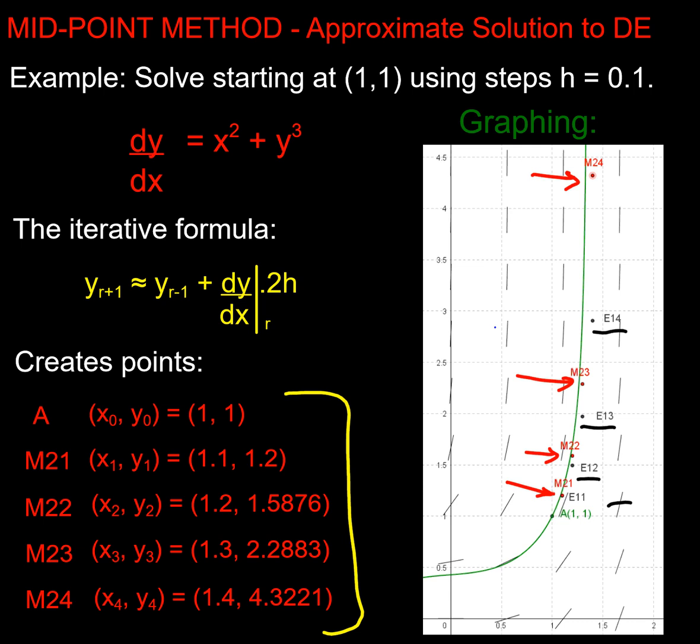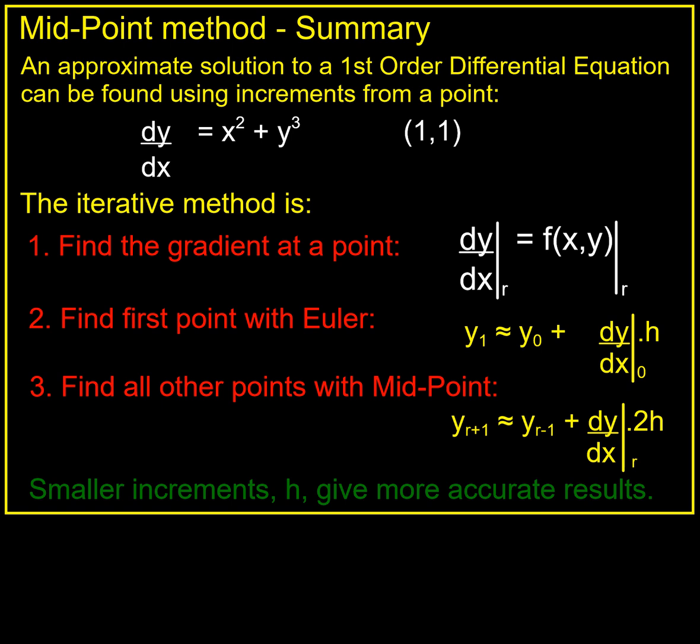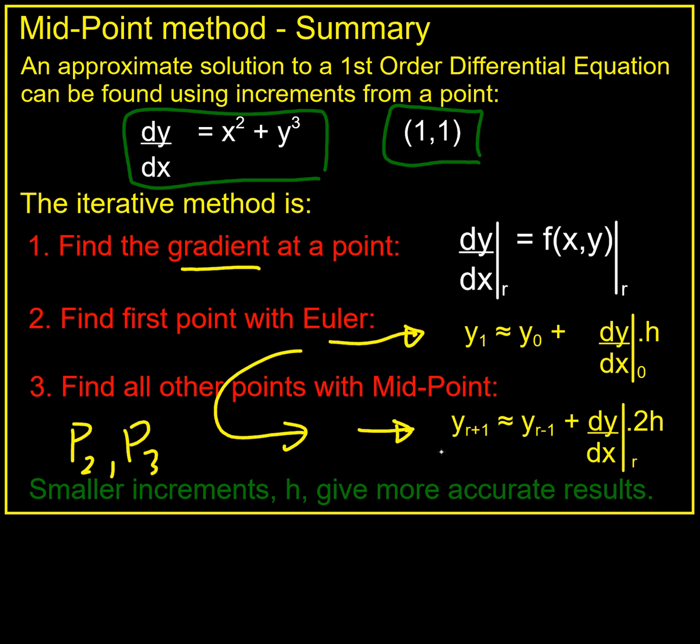And if they ask you in Excel to use the midpoint method, this is what you're going to do. So here we have a summary of the midpoint method: remember we're finding our gradient from our function, from our differential equation. We're starting at the point they give us on our differential equation as our initial condition. Then to find our first point p1 we're going to use Euler, but from then on to find p2, p3, etc., we're going to be using our midpoint iterative formula like that. Once again, if I want to make it more accurate I just make the increments smaller. So there you have it, best of luck.